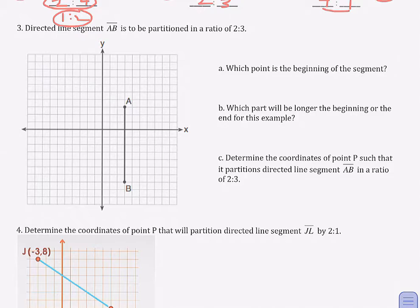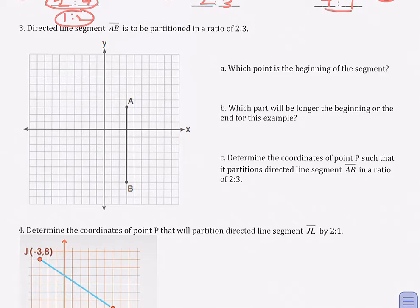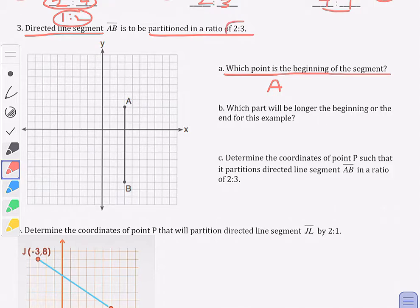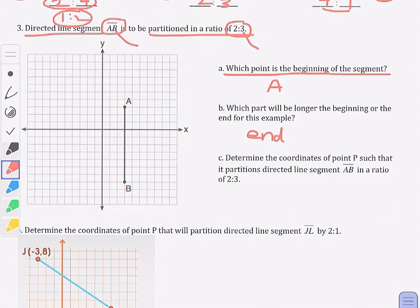Question three — I'm going to give you a chance to think about it before I give you the answer. Directed line segment AB is to be partitioned in a ratio of two to three. Since it's a directed line segment, A would be the beginning. Which part will be longer, the beginning or the end? The ratio is two to three, so it would be the end — because the second number is larger than the first number. So B would actually win this tug of war, getting three of the smaller pieces while A will only get two of them.